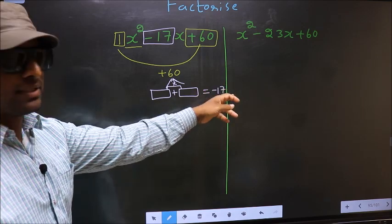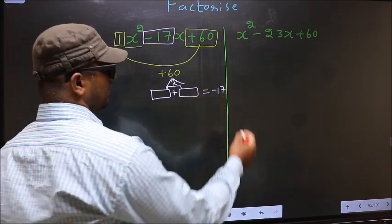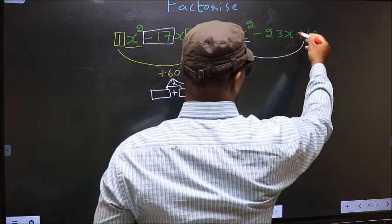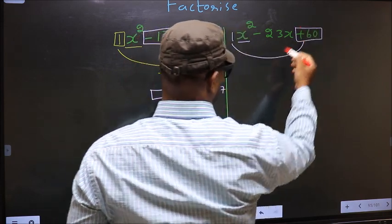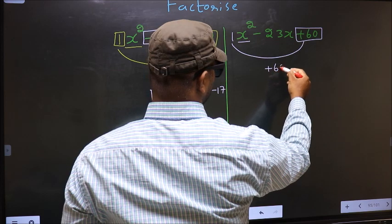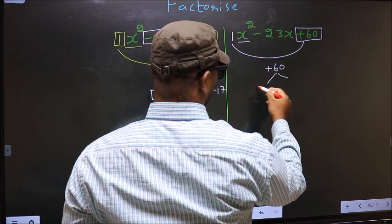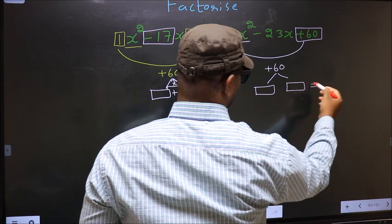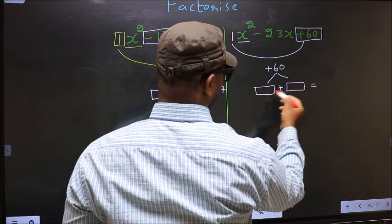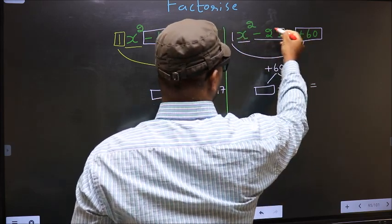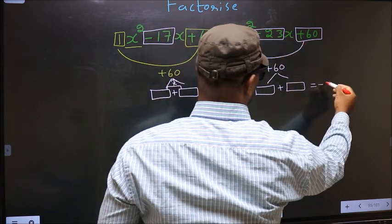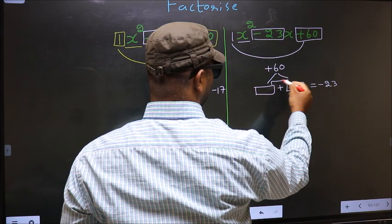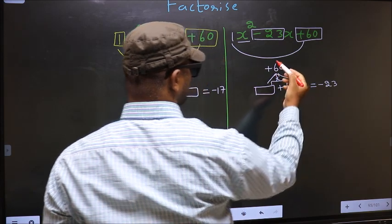Now do the same thing for the second expression. The coefficient of x squared, 1, multiplied to the constant plus 60, we get plus 60. Now look out for two numbers such that when you add them you get the middle coefficient minus 23, and also when multiplied you should get plus 60.